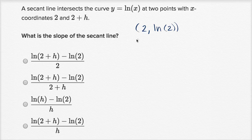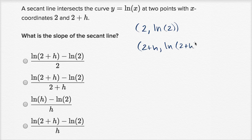And when x is equal to two plus h, what is y? Well, y is always going to be the natural log of whatever x is. So it's going to be the natural log of two plus h. And so these are two points that sit on the secant line — this is where the secant line intersects our curve — and if you know two points on a line, you can figure out the slope.